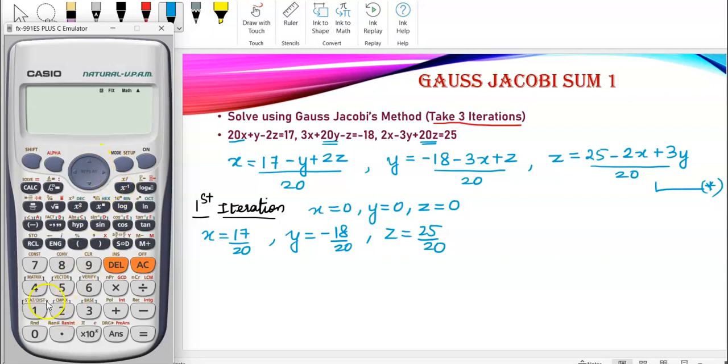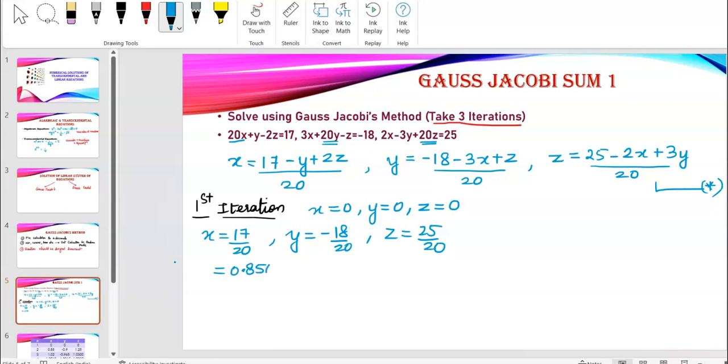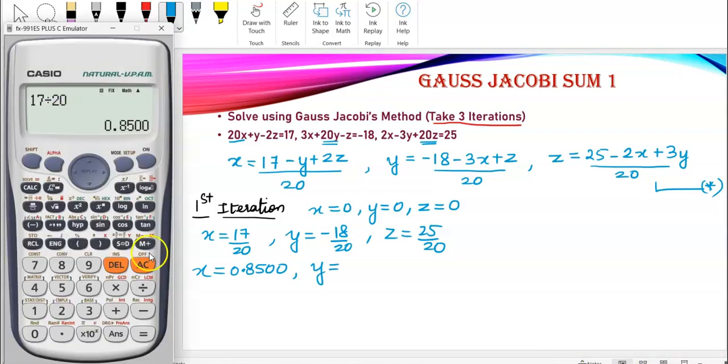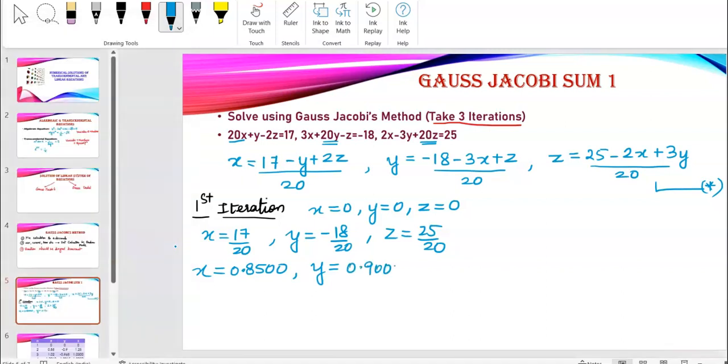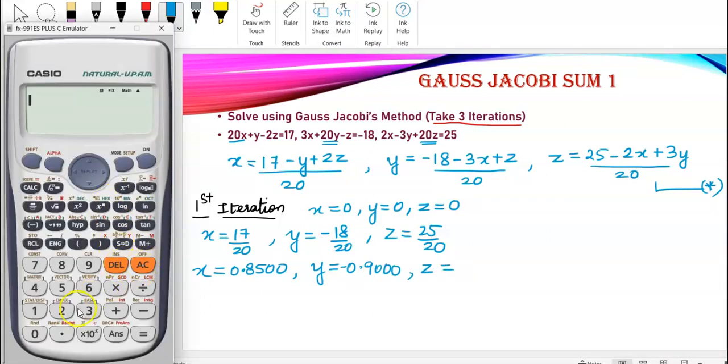So, we'll calculate it in decimals. I have 17 divided by 20 and in the decimal, it's going to be 0.8500. You can see it's always giving me the answer in 4 decimals because I fixed it into 4 decimals. Second is negative 18 divided by 20. That's giving me negative 0.9000. Z is 25 divided by 20. Of course, you can do it orally also. Simple numbers. So, that gives me 1.2500.